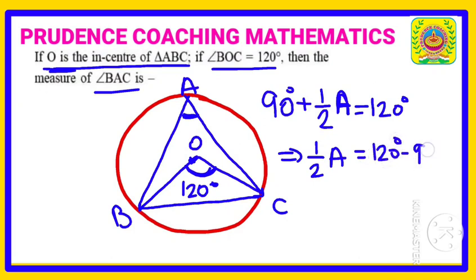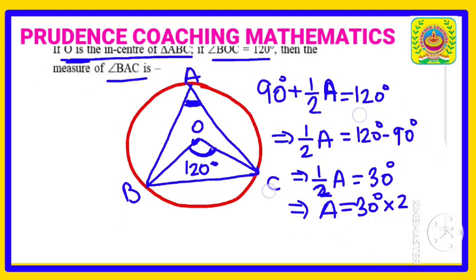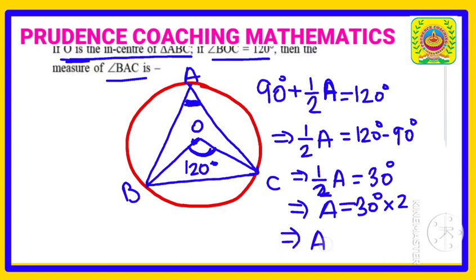So half of A, you are getting 30 degrees. 120 minus 90 is 30 degrees. So A - this 2 is in the division - if we take on the other side, it will be 30 degrees multiplied by 2. So value of this particular angle, that is angle A, is 60 degrees. This is our answer.